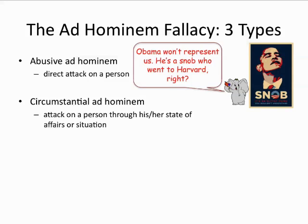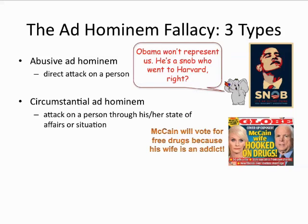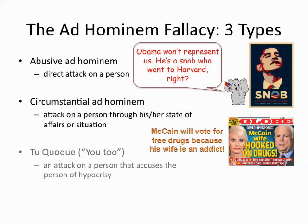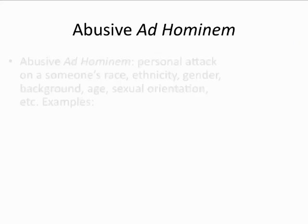Next, the circumstantial ad hominem, which attacks an arguer through his or her personal states of affairs. In this example, Senator McCain is attacked through his marital circumstances. It's worth noting that circumstantial ad hominems are often used to impute an assumed bias to a person based on his or her circumstances. Finally, we'll look at the tu quoque, or "you too" fallacy. Here's Bernie Madoff trying to deflect the accusation that he's a fraud by claiming his clients are just like him — essentially arguing that he can't be accused by people engaged in similar practices.